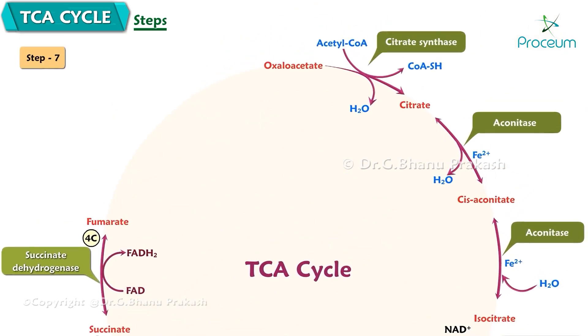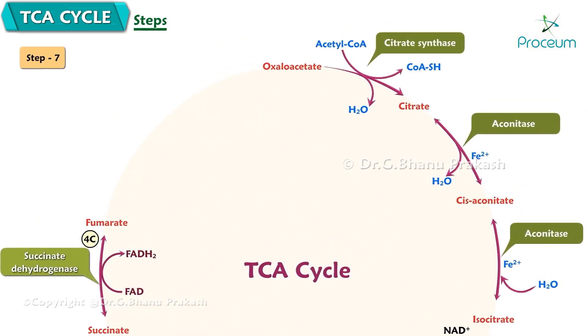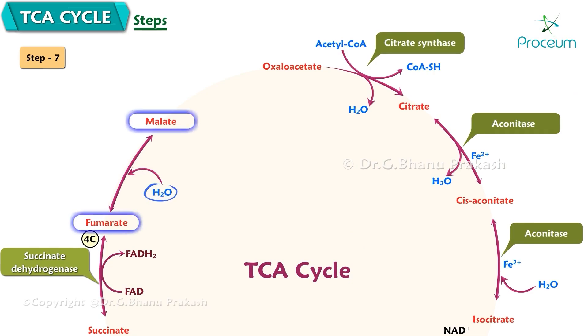Step 7: Conversion of fumarate to malate by hydration. Addition of water across the double bond of fumarate forms malate. The enzyme fumarase is a lyase.